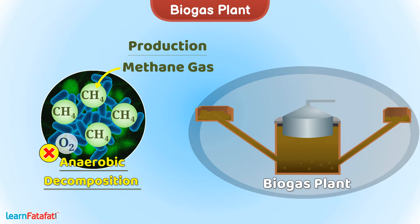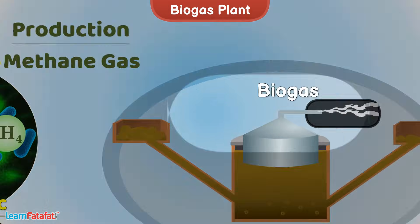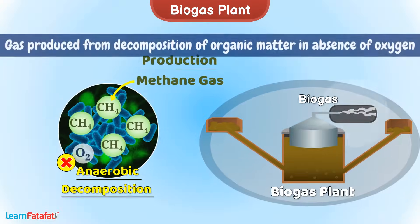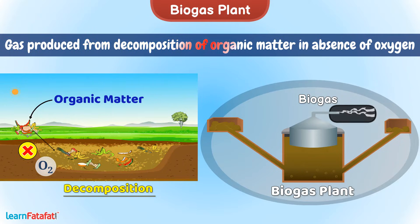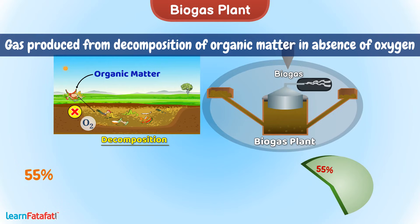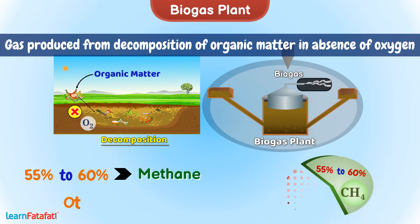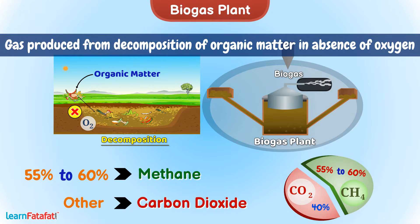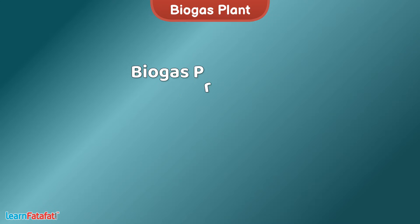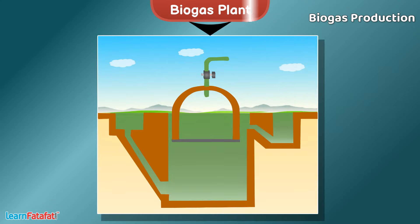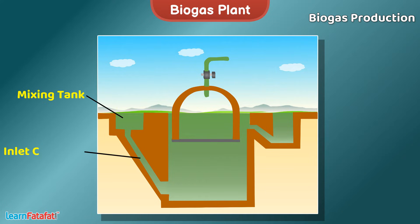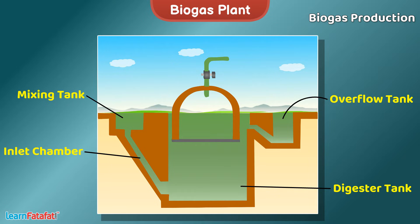A biogas plant is a plant in which biogas is produced. The gas produced from the decomposition of organic matter in the absence of oxygen is called biogas. Biogas consists of 55% to 60% methane and the rest is carbon dioxide. The biogas production is carried out in biogas plants, which have five components: a mixing tank, an inlet chamber, a digester tank, an overflow tank, and an exit pipe.